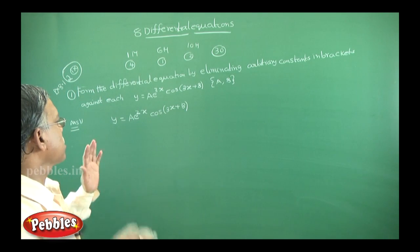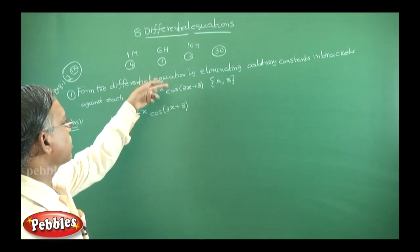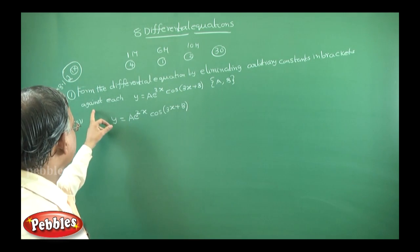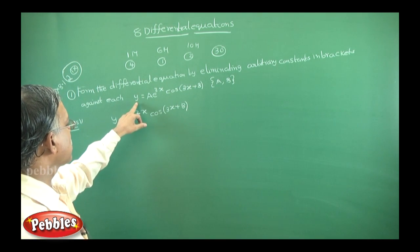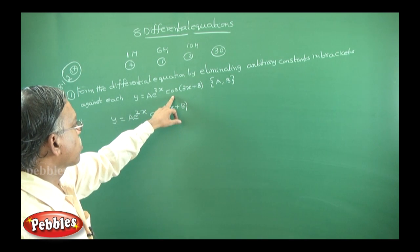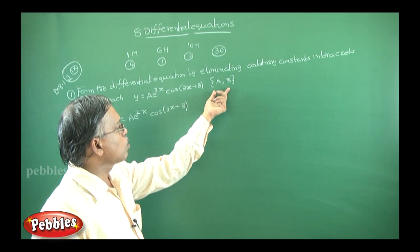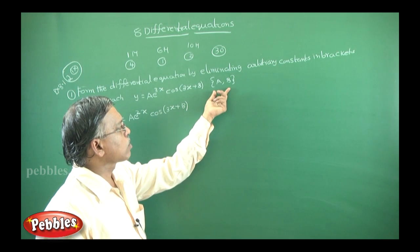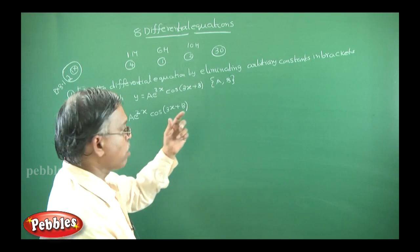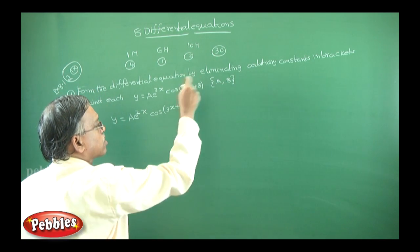The procedure is: they will give an equation like 'form the differential equation by eliminating arbitrary constants', for example y = a·e^(2x)·cos(3x + b), where a and b are two arbitrary constants. That means you have to frame the differential equation by eliminating these two constants.